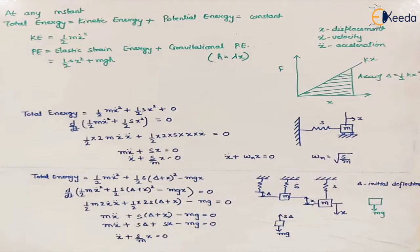At any instant, total energy is the sum of kinetic energy and potential energy, which is constant. Since we are not taking the effect of damping into account — there is no dissipative element — the energy is conserved; there is no loss of energy.